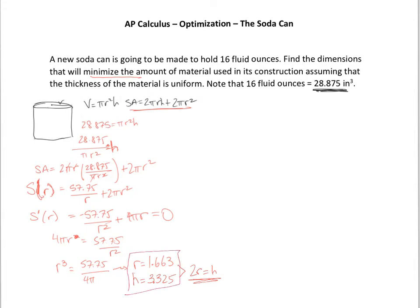For this problem we found the dimensions. But let's go ahead and take it a step further — I'm going to generalize this. Once you see this pattern, you'll be able to use it for everything. Whenever you're given any one of these problems, you just know that twice the radius will be the height. We're going to use both formulas again, and this time, since I want to minimize, I am going to find ds/dr. I chose to do it in terms of r because it's easier to solve for h on this side.